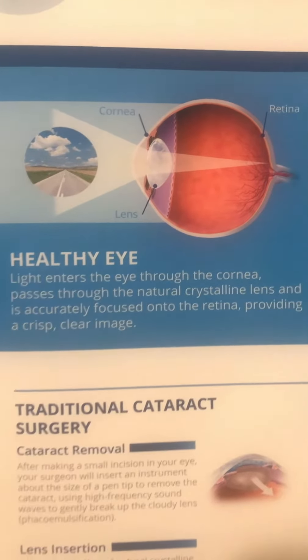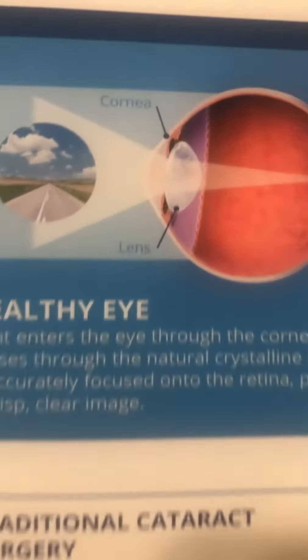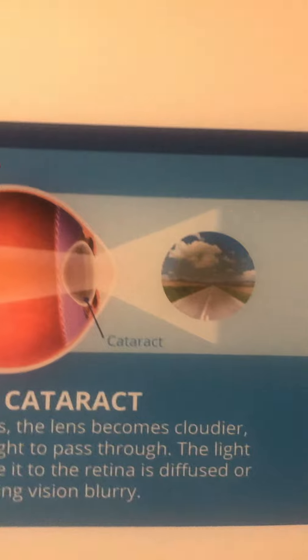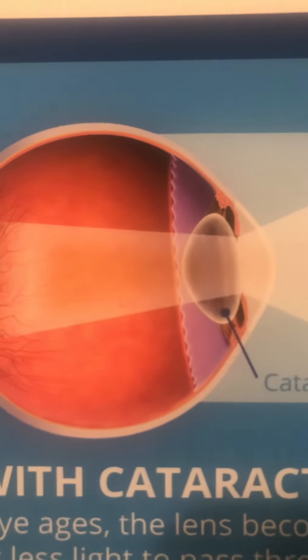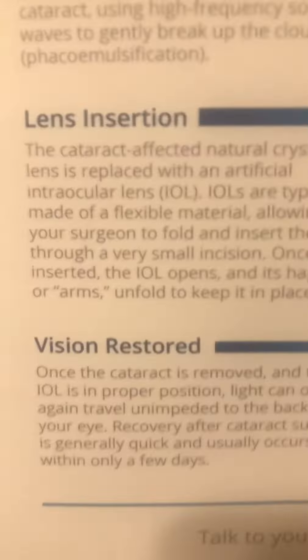I've done a lot of videos about cataract types, surgical procedure, and outcomes. This is the healthy eye — you can see the lens right there, it's a clear lens. But in the eye with cataract, you can see an opacification right there, and this is how the person is going to see. So we need to send them for cataract surgery. The traditional process involves removal of the cataract, then lens insertion — the intraocular lens — and then vision is restored.